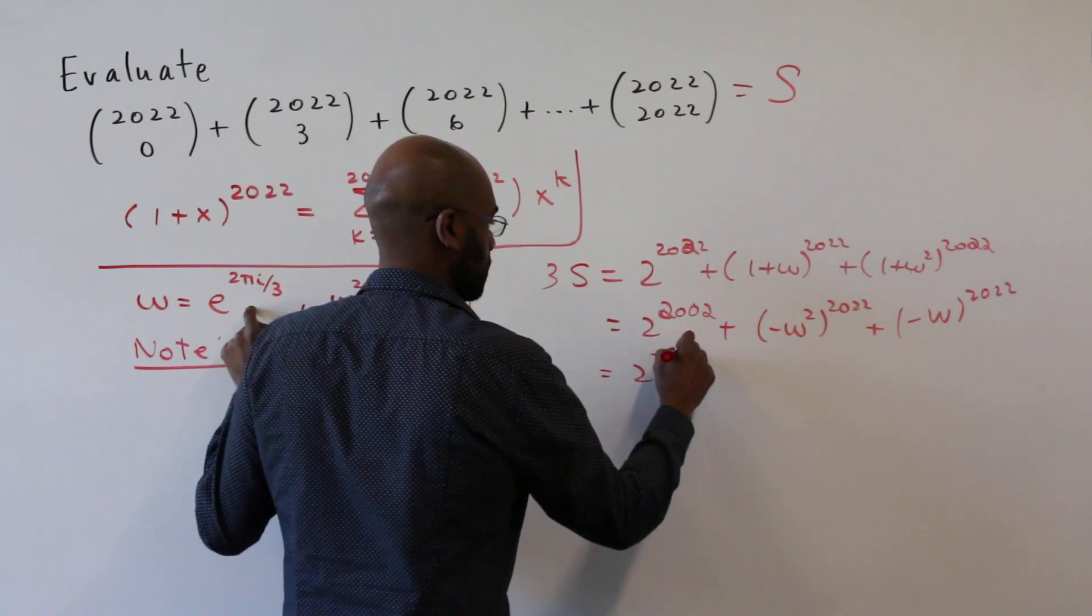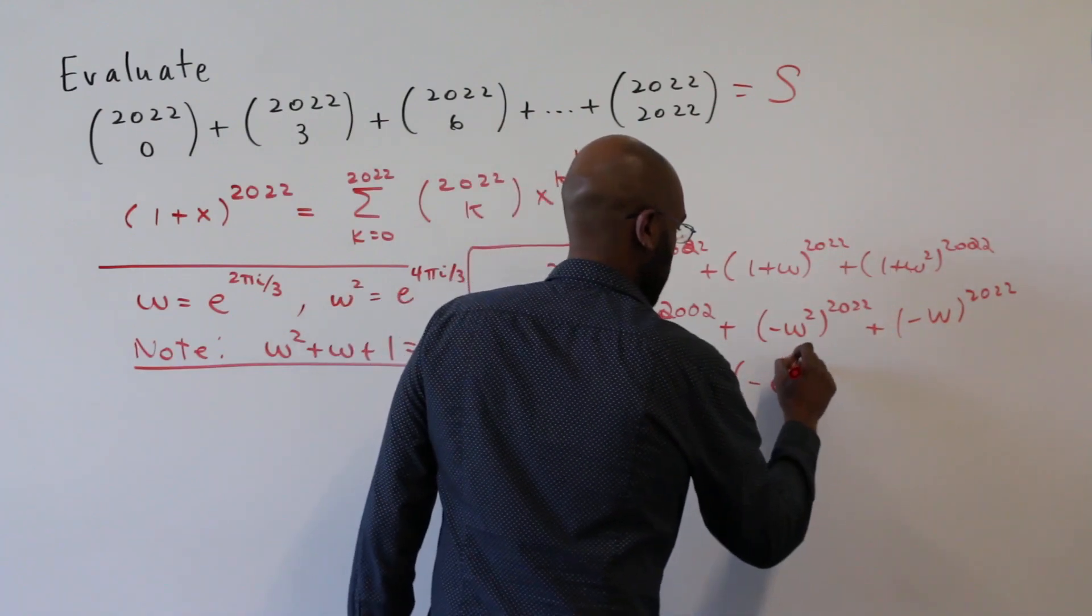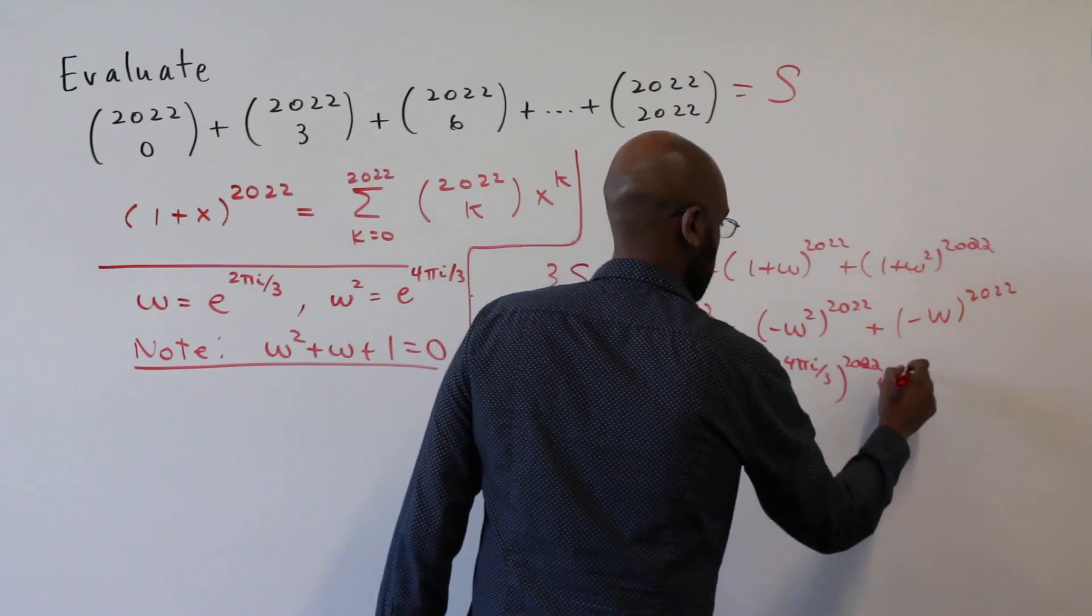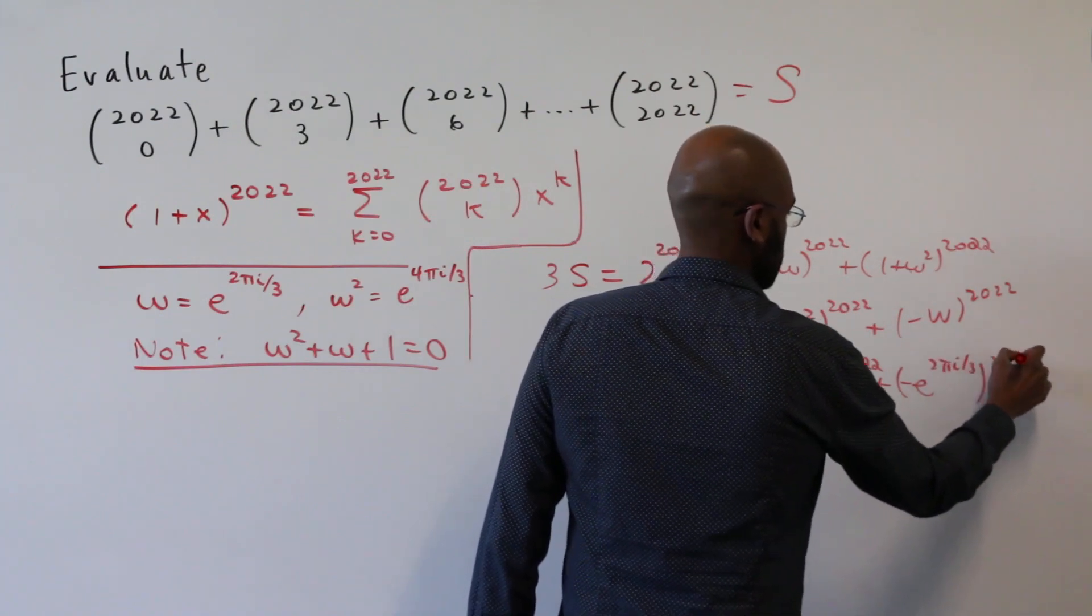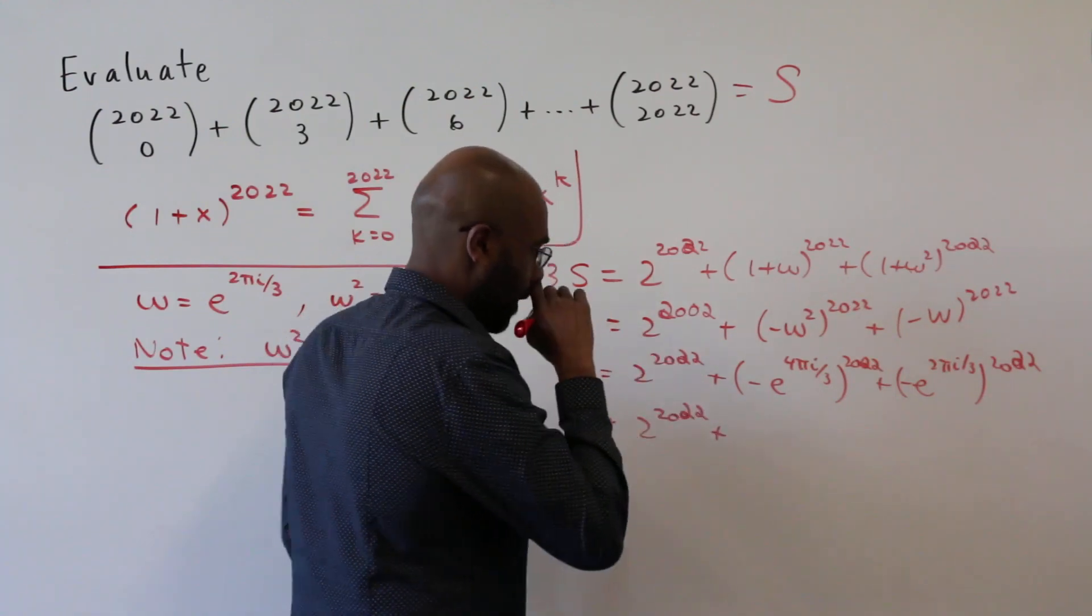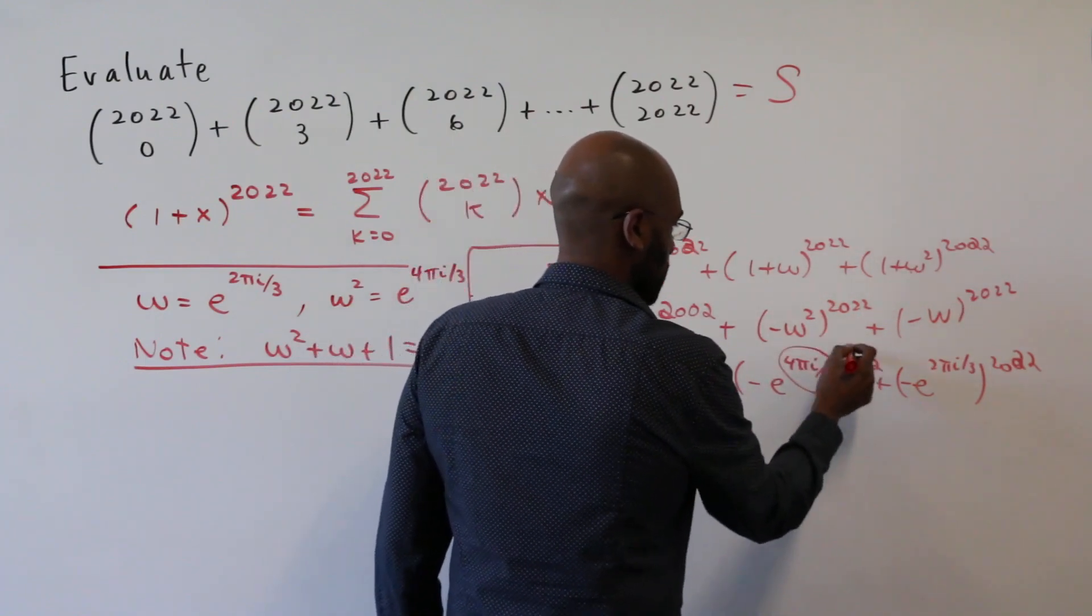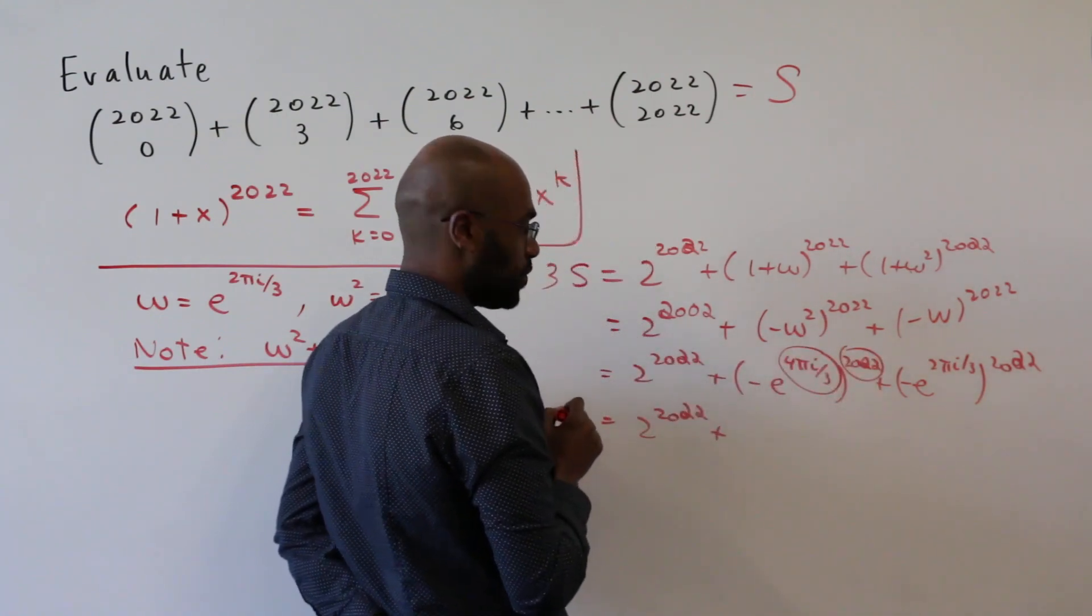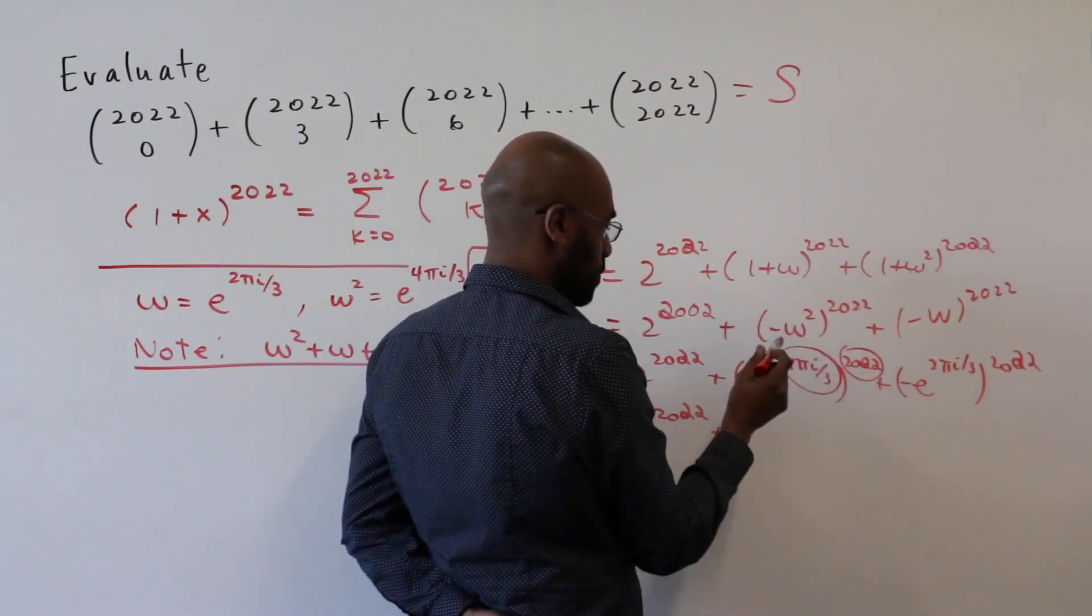Okay, plugging in what those actual values are, we get two to the 2022 plus negative e to the 4 pi i over 3 to the 2022 plus negative e to the 2 pi i over 3 to the 2022. This negative will go away because of the exponent. And this exponent here is going to actually be a multiple of 2 pi i. Because 3 divides 2022.